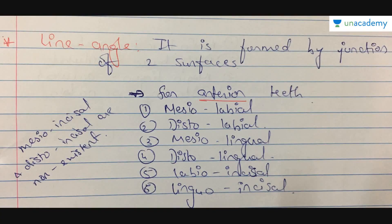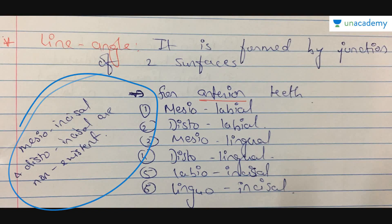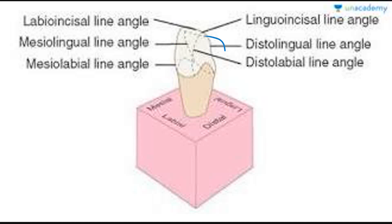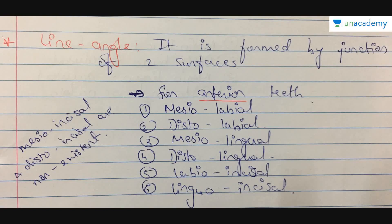Mesioincisal and distoincisal line angles do not exist for anterior teeth, because the incisal edges of anterior teeth are rounded. Line angles should be sharp and not rounded. Therefore, mesioincisal and distoincisal line angles do not exist.